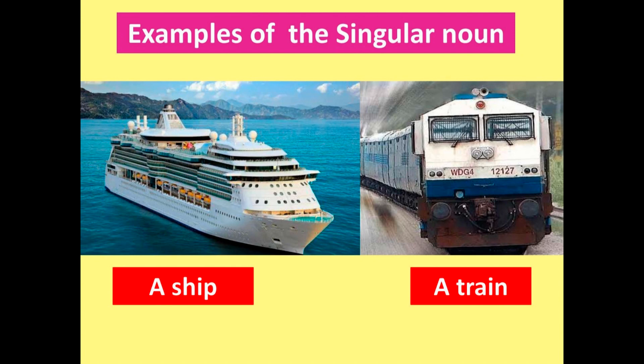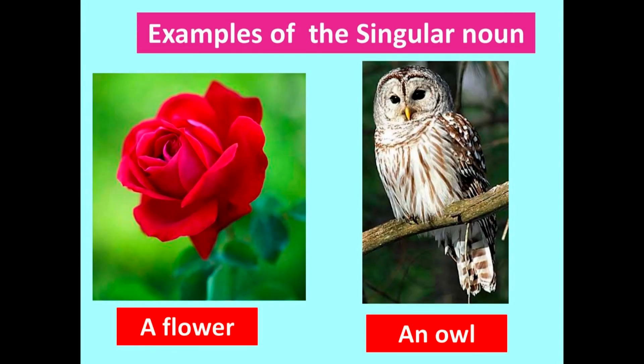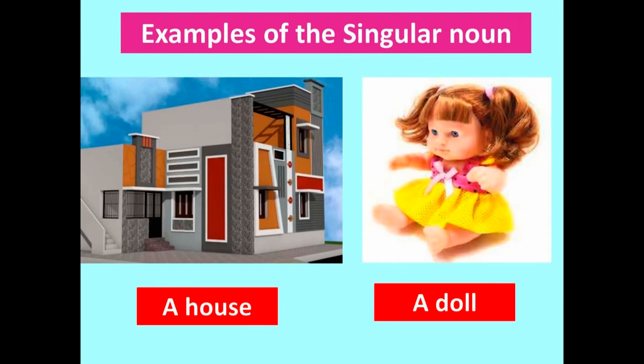Examples of the singular noun: a ship, a train, a flower, an owl, a house, a doll.